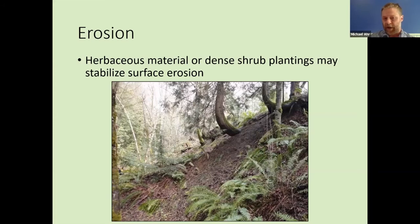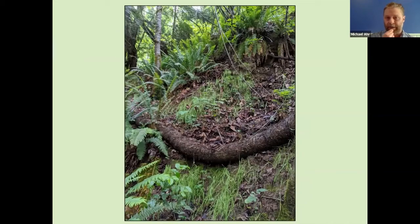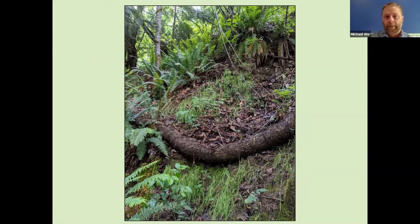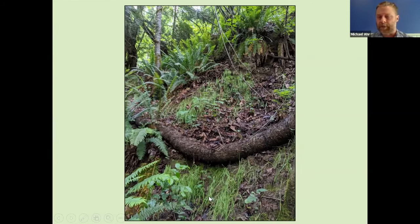On this particular project, we added some shrubs and a straw wattle — the same thing you see on construction and highway projects. I can pick out a shrub that was planted, and also blue wild rye planted here, which is a fairly affordable plant you can throw into the understory and it'll grow and reduce erosion.